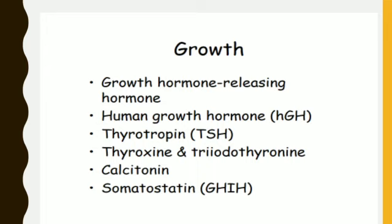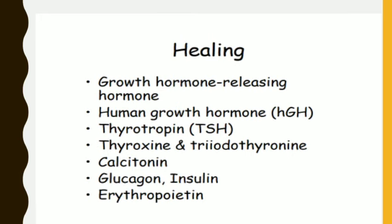In growth, there are many hormones involved, for example: growth hormone releasing hormone, human growth hormone, tyrotropin, thyroxine, T3 and T4, calcitonin, and somatostatin. In the healing process, the relevant hormones include growth hormone releasing hormone, human growth hormone, tyrotropin, T3 and T4, calcitonin, glucagon, insulin, and erythropoietin. These hormones work during the healing process.